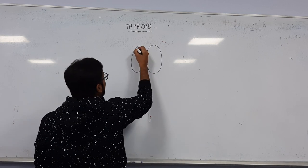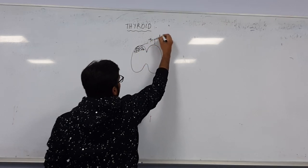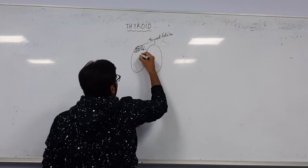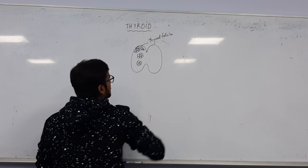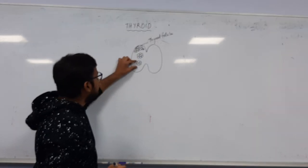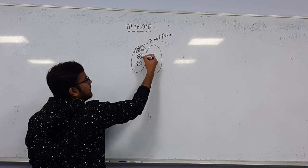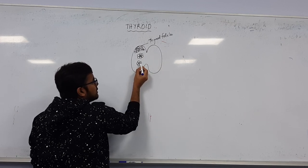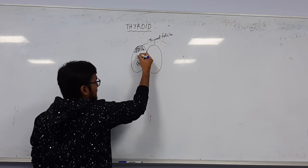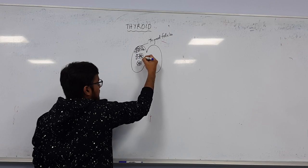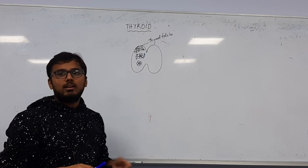The thyroid gland has many cells called thyroid follicles, arranged in a flower shape. Each thyroid follicle has a center part called the lumen, surrounded by follicular cells. Near to the follicle, there are other cells called para-follicular cells. Note that the parathyroid glands are located on the back of the thyroid gland.